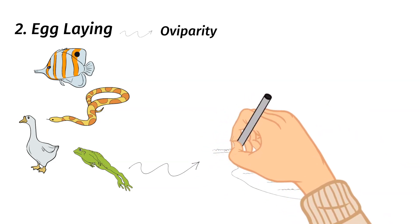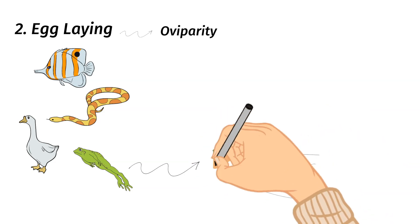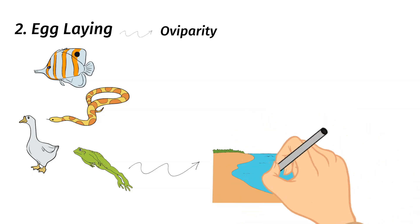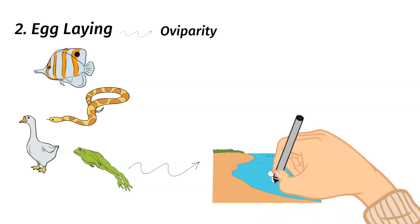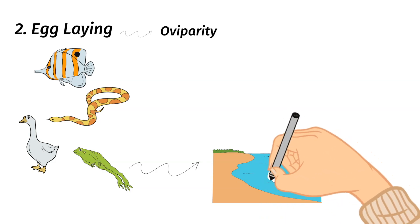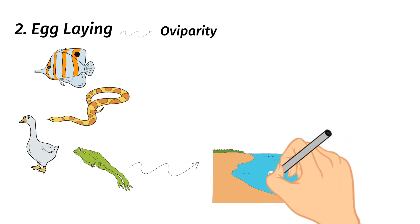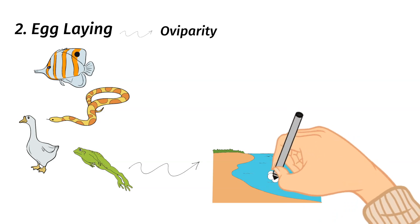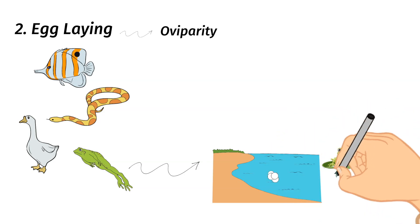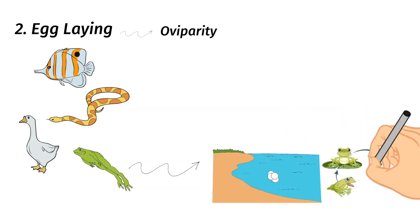For example, amphibians like frogs will lay eggs in the water to help keep their eggs wet as they develop. When these amphibians hatch, they undergo a type of metamorphosis where they turn from animals that live in the water with gills and fins to air-breathing adults with lungs and legs.